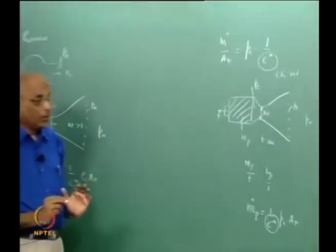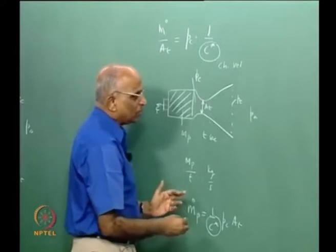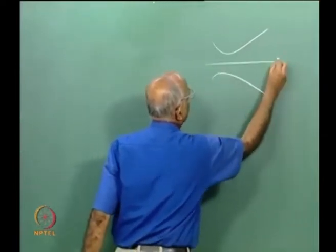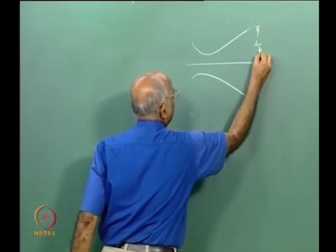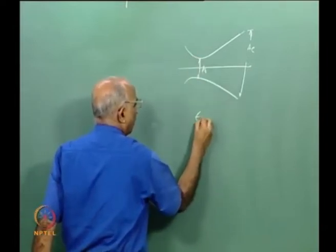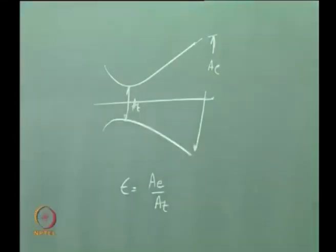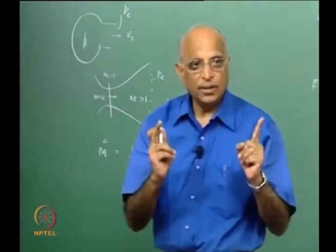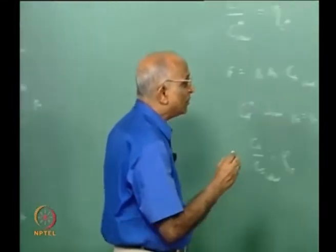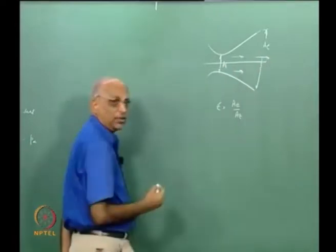We also did something important: instead of specifying exit pressure and chamber pressure, I can specify a nozzle in terms of the area ratio Ae/At, which is more representative because the throat is where the Mach number is always 1. All of what we have done is for an ideal case — an adiabatic nozzle with one-dimensional flow — where all the mass flow rate contributes to thrust and expansion.